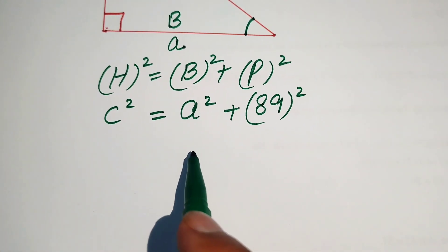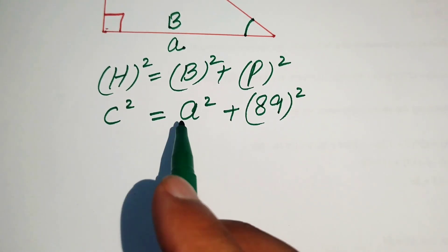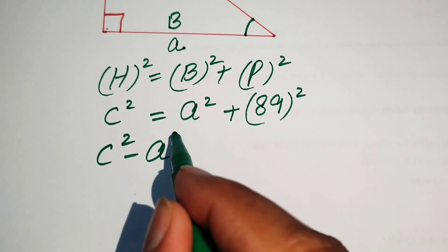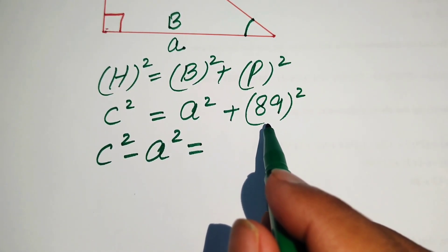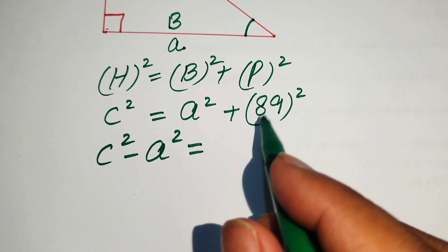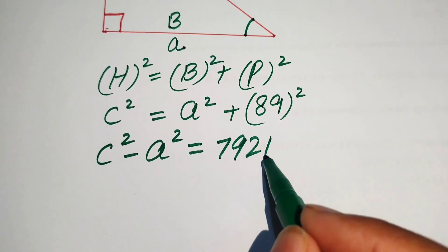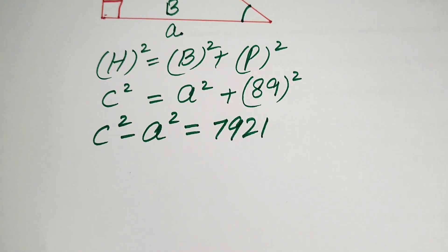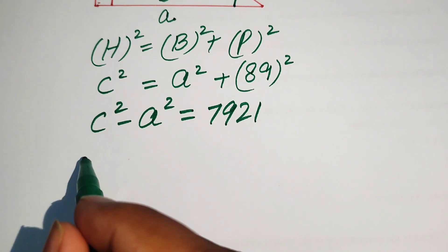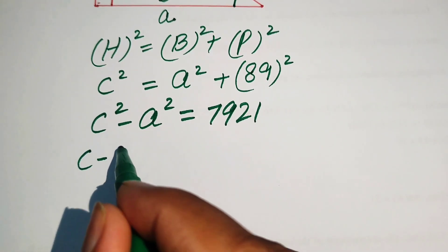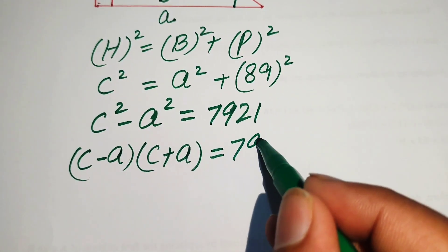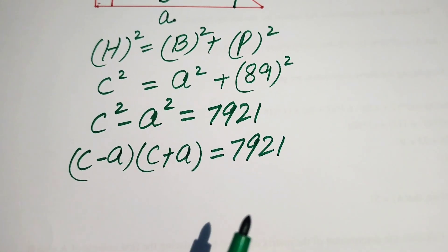We move c² to the left-hand side, giving c² − a² = 89² = 7921. Now we apply the difference of squares identity: c² − a² = (c − a)(c + a) = 7921.